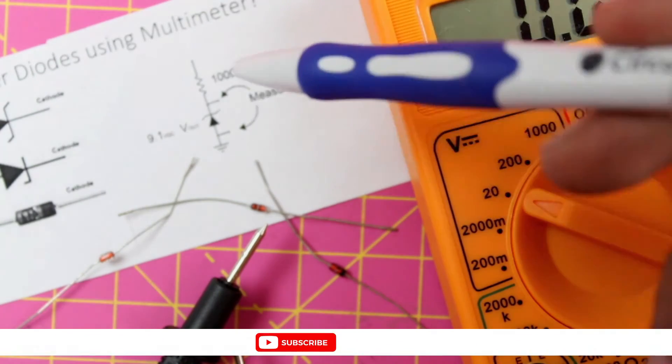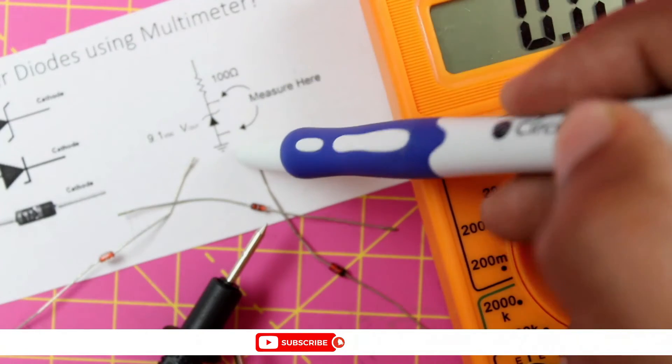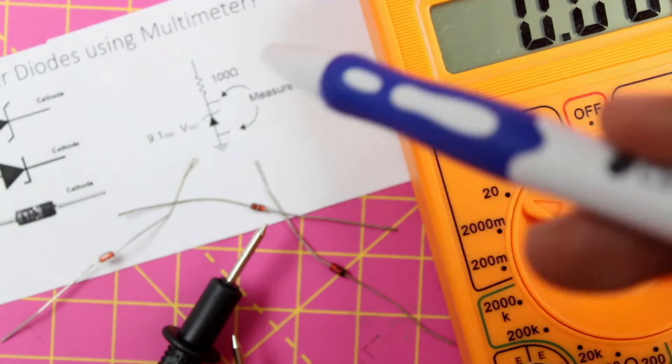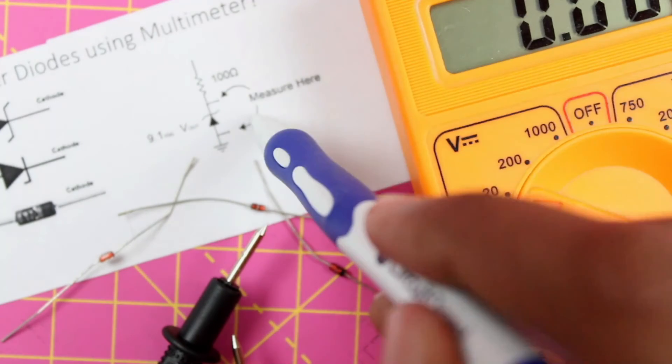This way if we put our multimeter across the zener diode, we will be able to measure the voltage drop across the zener diode and figure out what type of zener diode it is.